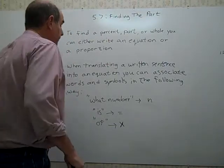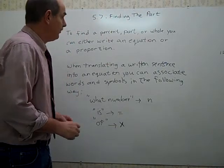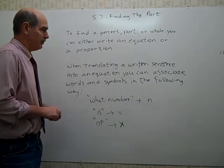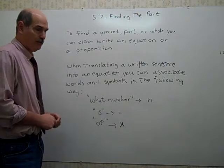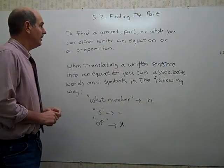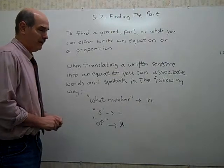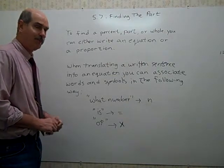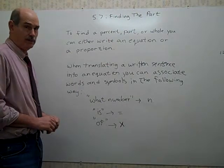Welcome to Lesson 7 of Chapter 5, Finding the Part. This lesson focuses on how you can determine if you know the whole thing and what percent of the whole thing you want to find, how you can find that part. Actually this lesson lays the groundwork for 5.8, 5.9, and 5.10, so it may take a little bit longer, but that will make the next three a little bit shorter.